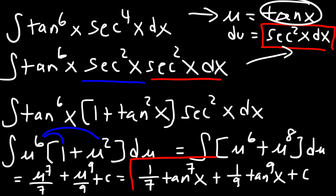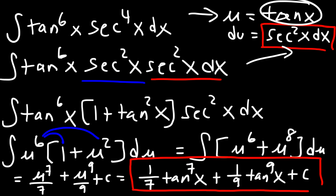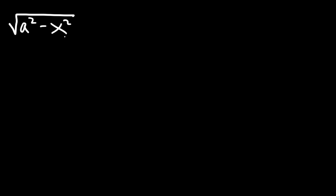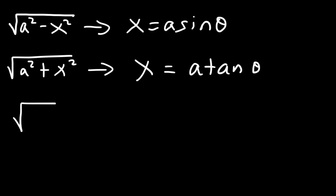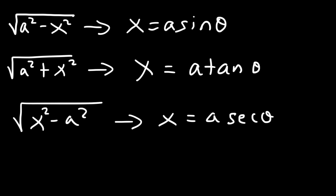That's the antiderivative of tangent to the 6th power times secant to the 4th power. Now there's something called trigonometric substitution — another integration technique you're going to learn in Calc 2. Whenever you see a squared minus x squared inside a square root, set x equal to a sine theta. If you see a squared plus x squared within a root symbol, the substitution is x equals a tangent theta. And if you see the square root of x squared minus a squared, set x equal to a secant theta.